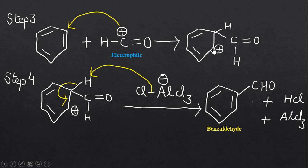In the next step, this hydrogen atom will be removed by the base AlCl4 minus which is generated in step one, and these sigma bond electrons will move into the ring. We will regenerate the aromaticity of the ring again, and now in this way we will get the benzaldehyde.